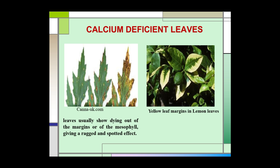Calcium deficient leaves usually show dying out of the margins or of the mesophyll, giving a red and spotted effect. In lemon leaves, yellow leaf margins appear.